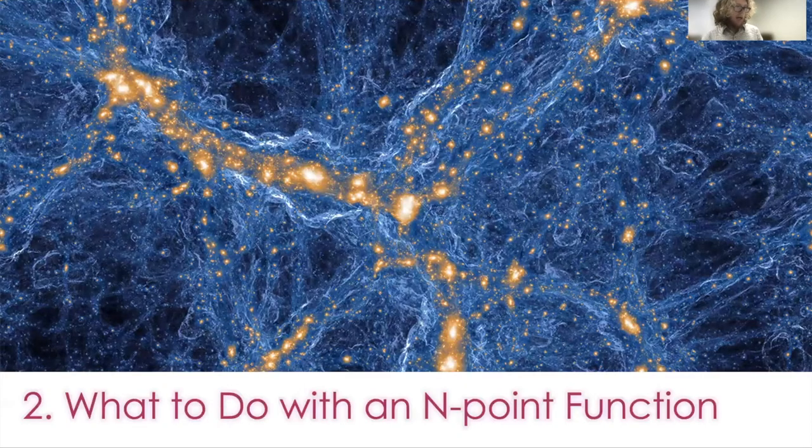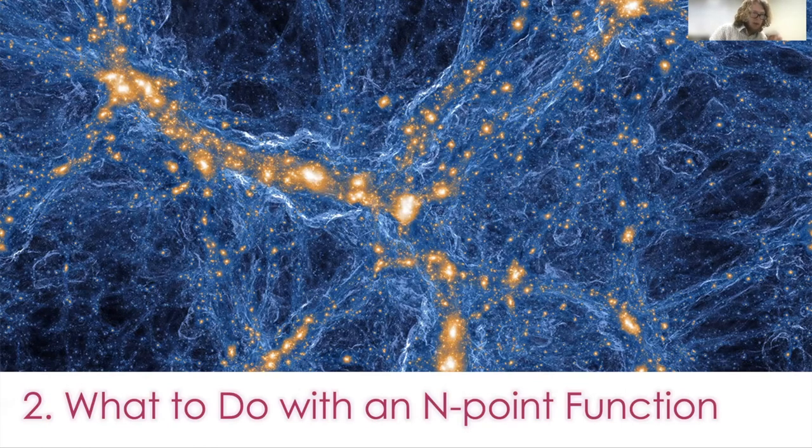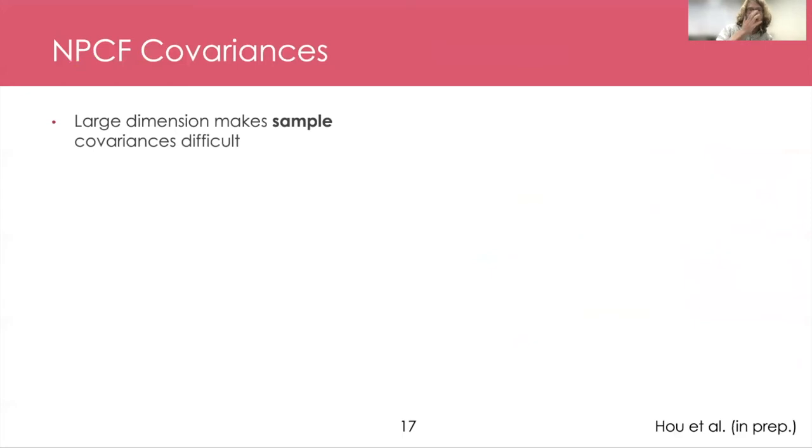Given that we can measure N-point functions, what can we do with them? So a key part of this is an understanding of the error bars of these N-point functions. If I give you some measurement, you have to decide, is this significant? How much of this is due to noise? So a key point of this is the covariance matrix. And a standard way to compute covariance matrices is simply to compute the statistic on a set of mocks and do a sample covariance. Turns out this is difficult for the four-point functions because it's a very large dimensional statistic. For example, in the four-point function of BOSS we've been measuring, it's 5,000 bins. So we need a heck of a lot of mocks in order to actually get this kind of sample covariance.